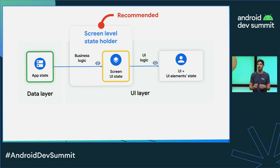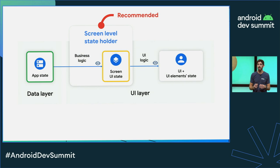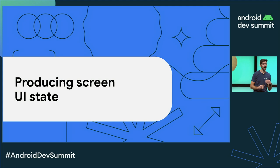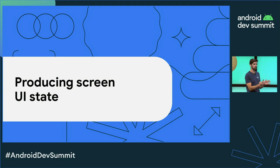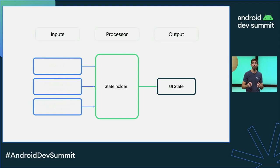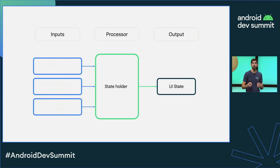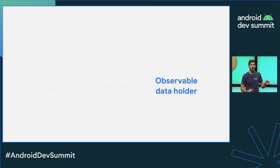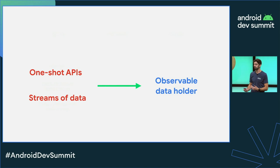Now we are going to look at how to produce screen UI state. The UI state is the output of a state holder processing some inputs, and those inputs could be events or local or external sources of state change. The UI state should be exposed as an observable data holder, which guarantees that the UI always has a UI state to render on the screen. The inputs can come as one-shot APIs or streams of data.